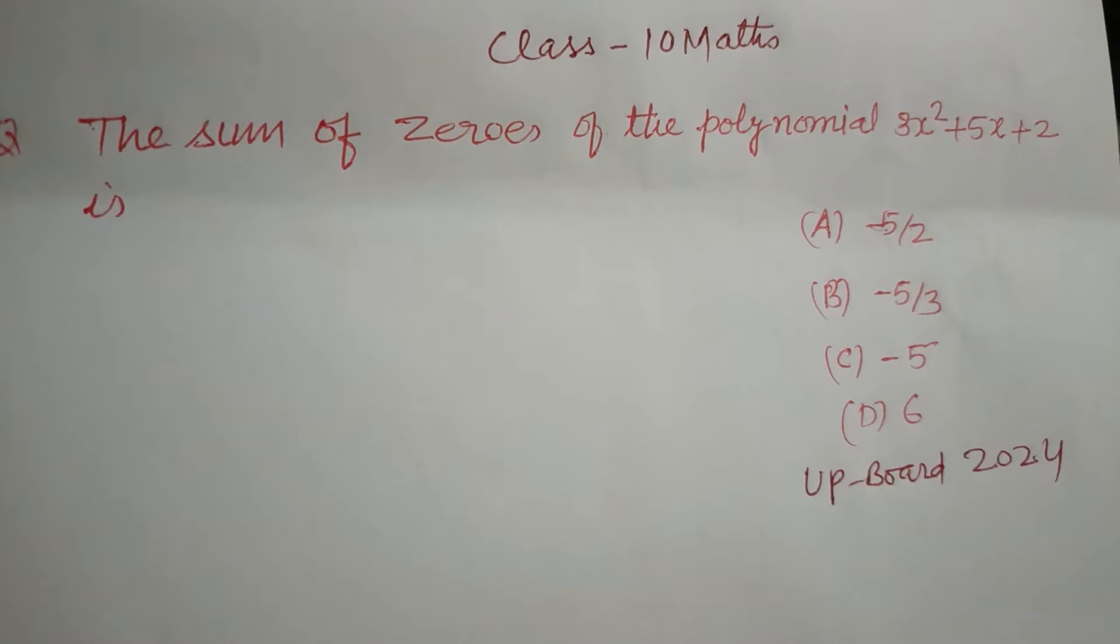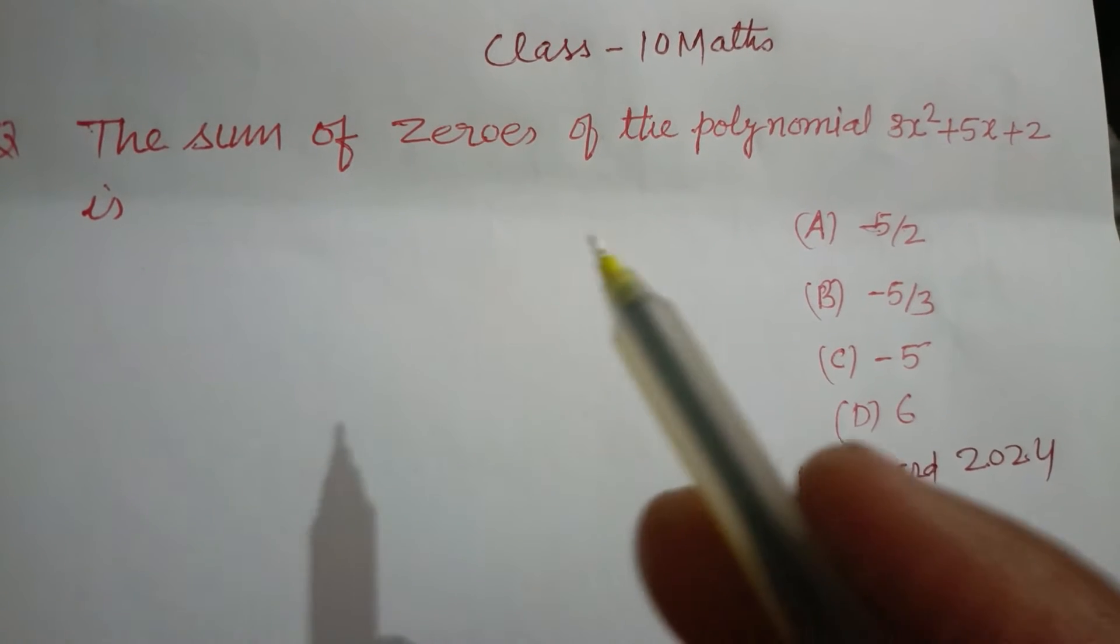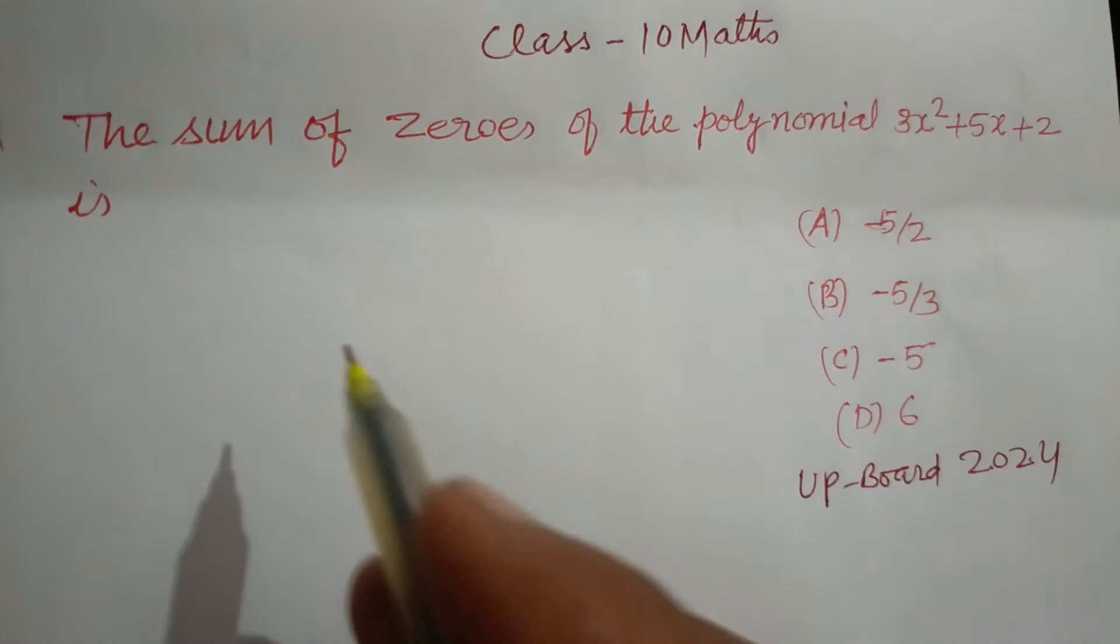This is a question from UP Board exam 2024. The sum of the zeros of the polynomial 3x² + 5x + 2 is.